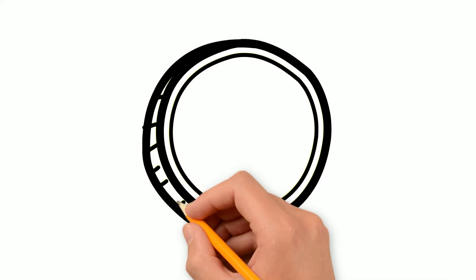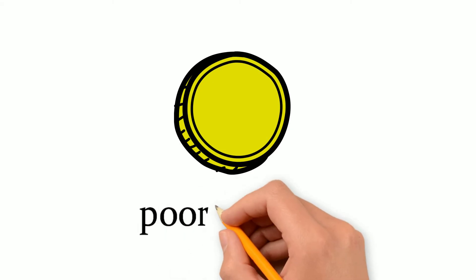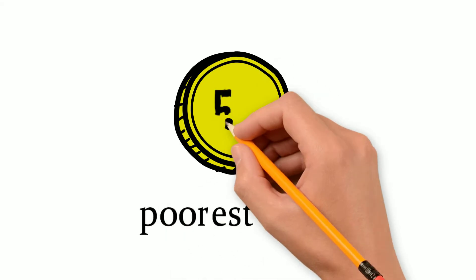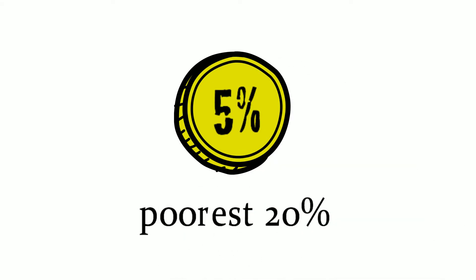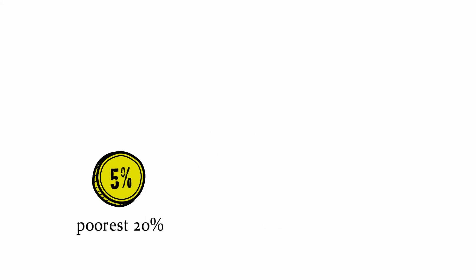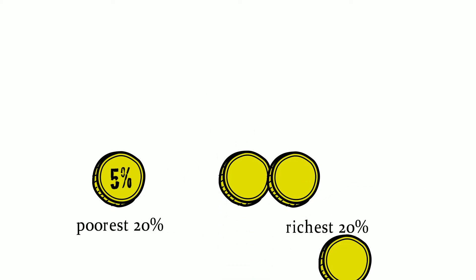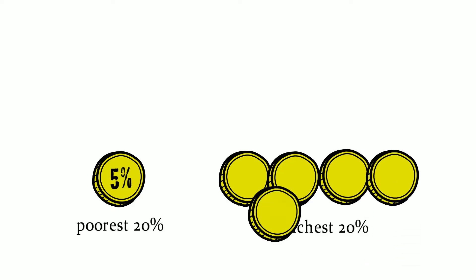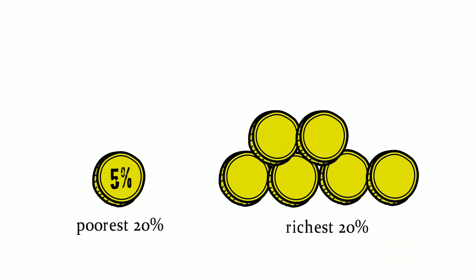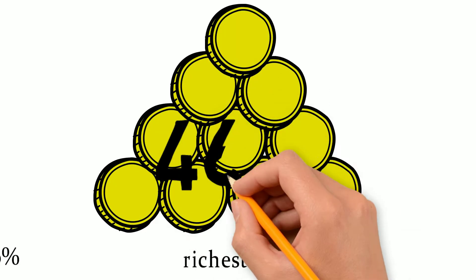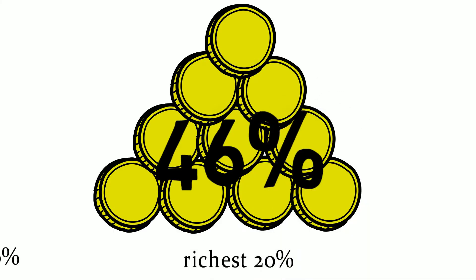Economic inequality is one of the most contentious issues of our time. In the United States, the poorest fifth of the population earn just 5% of the income, while the richest fifth get actually 46% of the total income. And those are rather conservative estimations by the World Bank.